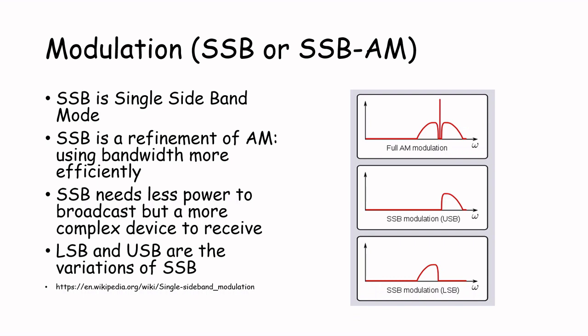LSB, or lower side band mode, and USB, or upper side band mode, are the two variations of SSB modulation. If your radio supports SSB mode, it means you can use lower and upper side band mode as well with your receiver.